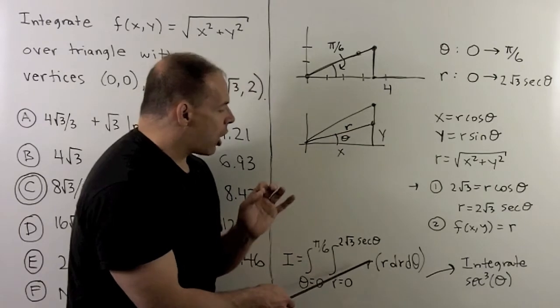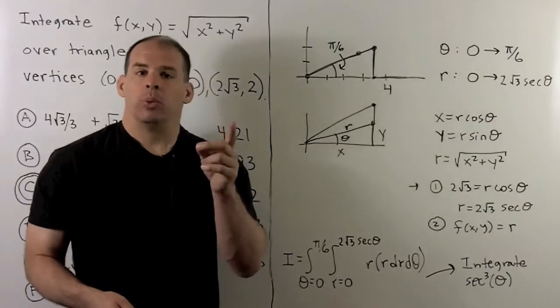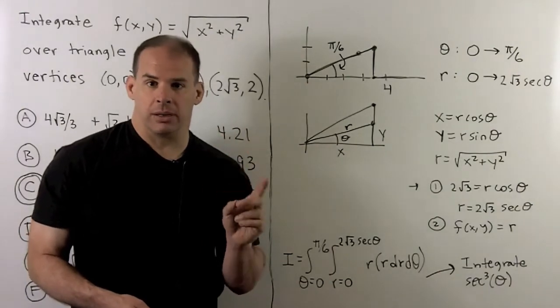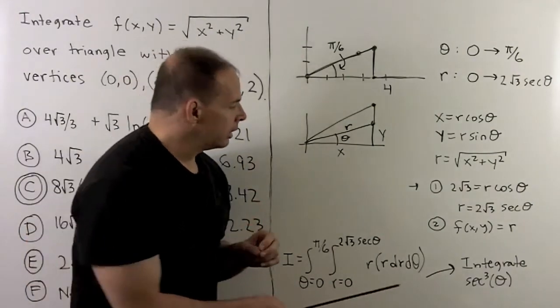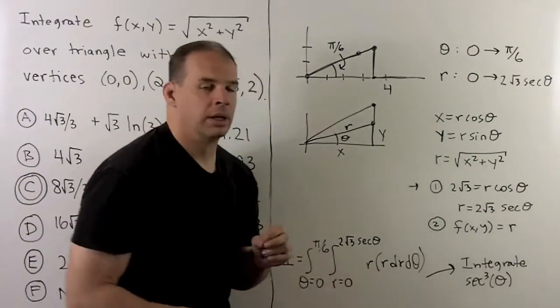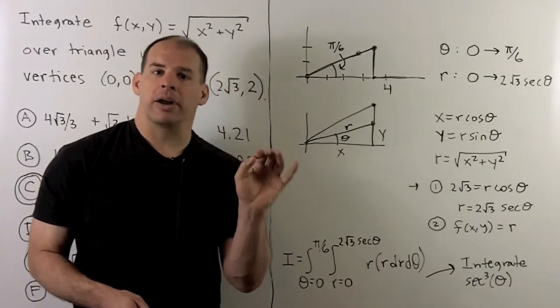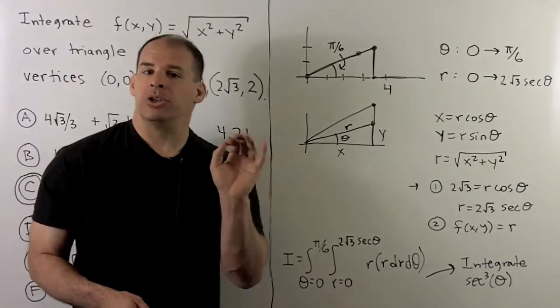Now, we have our function r, we have our element for area, which is r dr dθ. So our first integral is going to be r squared dr, or one-third r cubed. That's where the secant cubed theta comes in. Now, that's where we stop with the problem here. I'm not going to work out the precise answer. We just want an estimate.